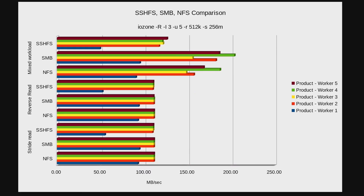Mixed workload — SSHFS did surprisingly well, actually pegged out at the network speed by the fifth group. SMB and NFS actually exceeded the network speed, so I don't know what kind of magic that was, but apparently it was writing more than it was sending. I've seen that on other benchmark results and always been surprised that you could hit 210 megabytes per second on a one-gig network. Then the reverse read pegged and stride reads pegged after the first workload. SSHFS is a little bit behind, and SMB and NFS are about the same on the reverse and real close on the stride reads.